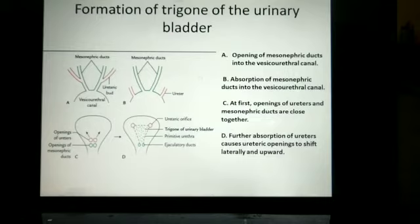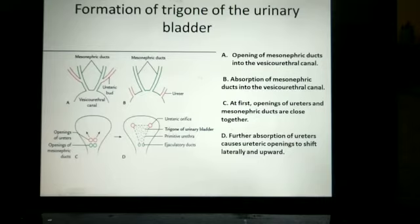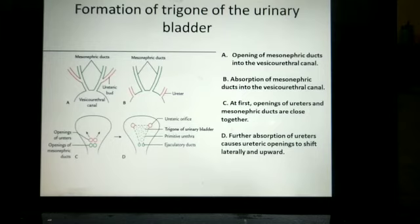The trigone, however, develops from absorption of the mesonephric ducts, and these mesonephric ducts are mesodermal in origin. They originate from the mesonephros, which is part of the nephrogenic cord, and this nephrogenic cord develops from the intermediate mesoderm. Therefore, the trigone is also mesodermal in origin. The muscle coat and connective tissue arise from the splanchnopleuric mesoderm surrounding the vesico-urethral canal, forming the connective tissue, muscle, and serous coat of the urinary bladder.